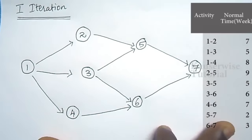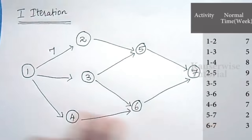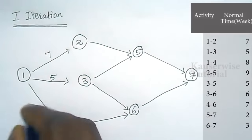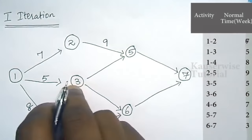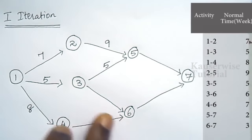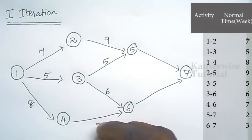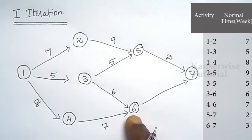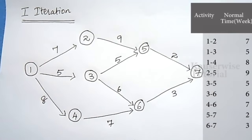This is the network diagram for the given activities. The first activity connects node 1 to 2 with duration 7 weeks. The second activity connects node 1 to 3 with duration 5 weeks. The third activity connects node 1 to 4 with duration 8 weeks. The fourth activity connects node 2 to 5 with duration 9 weeks. Activity 3 to 5 has duration 5 weeks, 3 to 6 has duration 6 weeks, 4 to 6 has duration 7 weeks, 5 to 7 has duration 2 weeks, and 6 to 7 has duration 3 weeks. This is the network diagram under normal conditions.